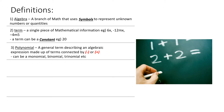Number 3, Polynomial: a general term describing an algebraic expression made up of terms connected by a minus or a plus. It can be a monomial, binomial, trinomial, etc.